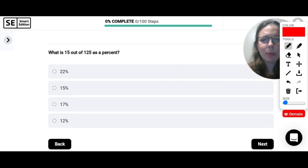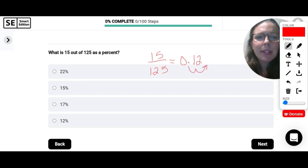What is 15 out of 125 as a percent? If we write this as a fraction, 15 over 125. That's what that means. Then we can turn it into a decimal. So just divide those two and you will get 12 hundredths. And then all I have to do is swoop my decimal to the right twice to turn it into a percent.